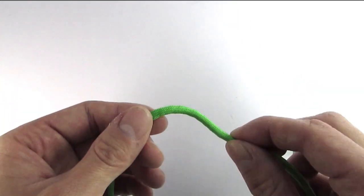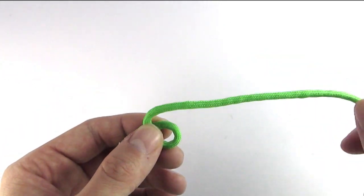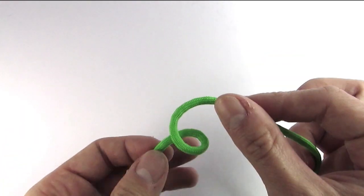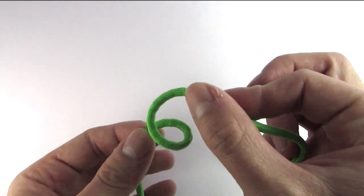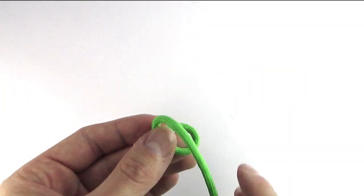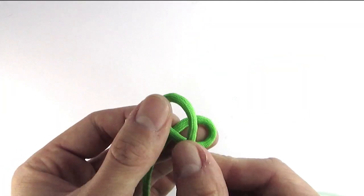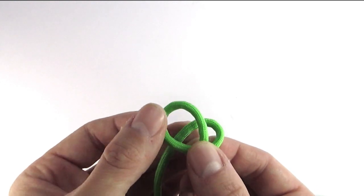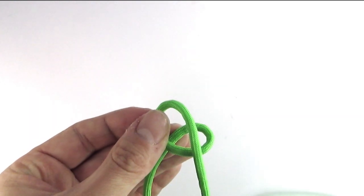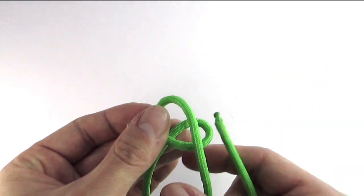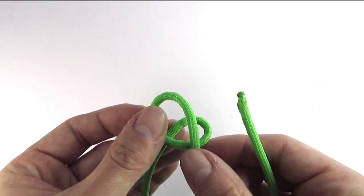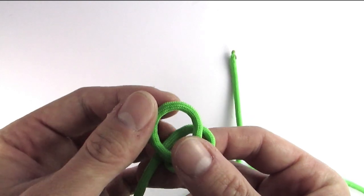tying this turk's head, which resembles a monkey fist. First, I'm going to make a loop, then place my working end over it, take the end and pass it behind the standing end.